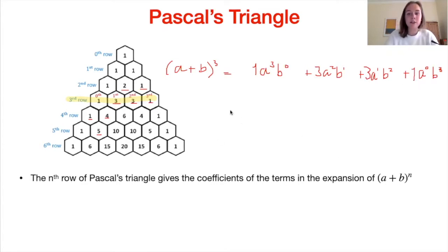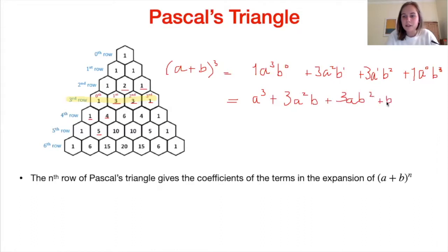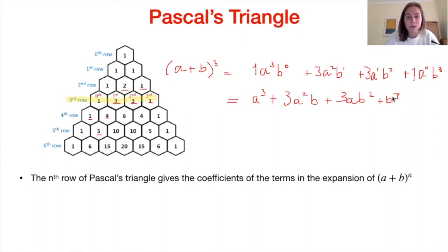Writing this out neatly, we get our final result: a cubed plus 3a squared b plus 3ab squared plus b cubed. Now that works quite well for relatively small values of n, but what if n is bigger than, say, six? Then we'd have to write out seven rows of Pascal's triangle, which isn't ideal — it's not time-efficient in an exam and we might make mistakes.